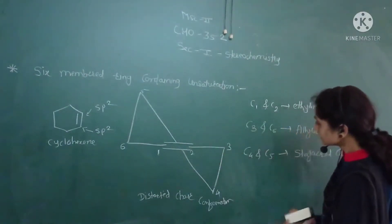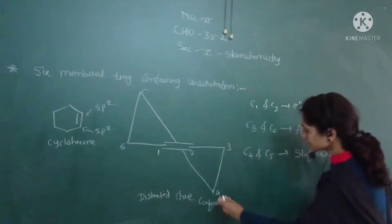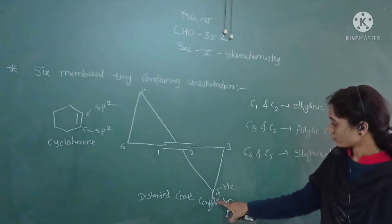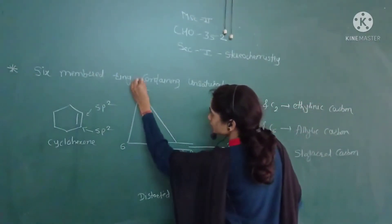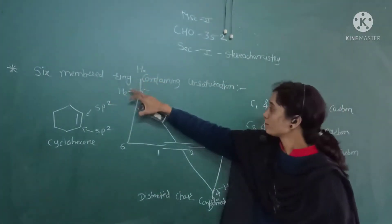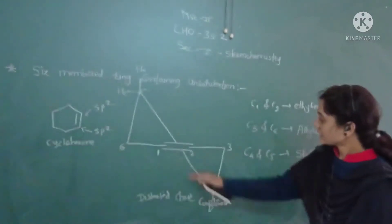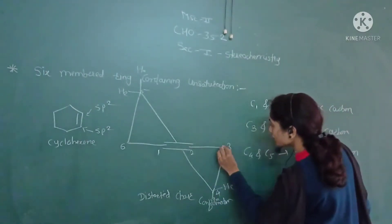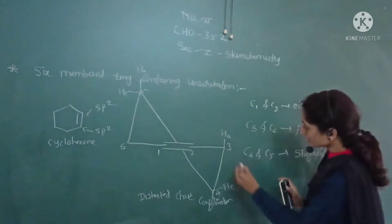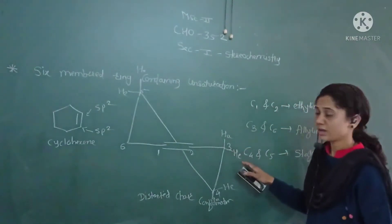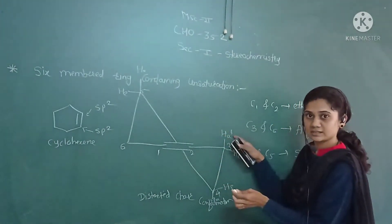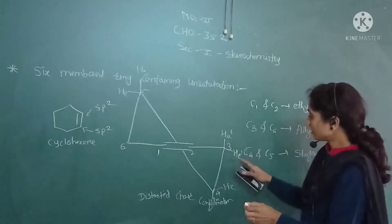C4 and C5 are staggered carbons — they are normally staggered to each other, so C4 has one axial hydrogen and one equatorial hydrogen, and C5 also has one axial hydrogen and one equatorial hydrogen. However, at C3 and C6, the hydrogens are not proper axial or equatorial; they are pseudo-axial (a′) and pseudo-equatorial (e′) hydrogens.